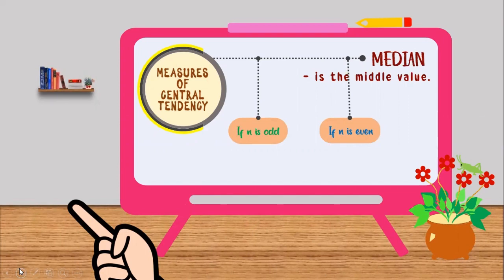And even numbers are numbers that are divisible by 2 like 2, 4, 6 and so on.